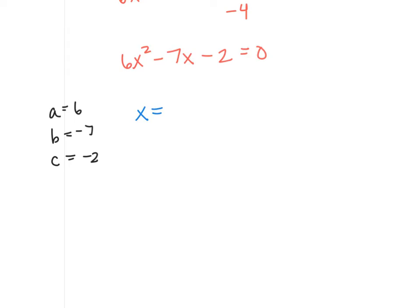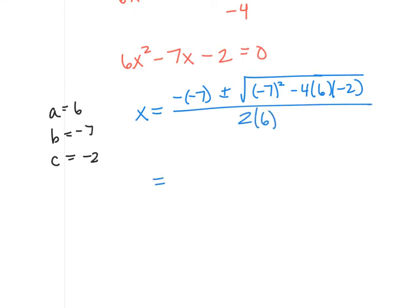Now we're going to solve with the quadratic formula. x equals negative b, so we have a negative negative 7. That's important to know, we'll talk about that in a minute. Plus or minus the square root of b squared. See how I'm putting that negative 7 in parentheses?